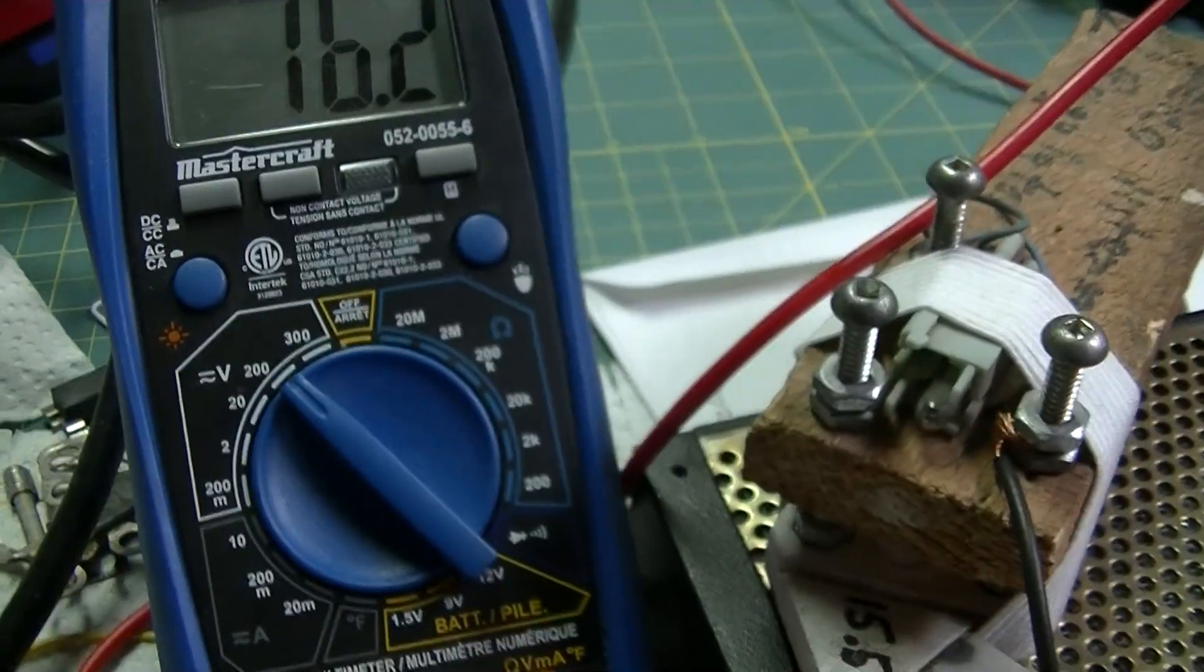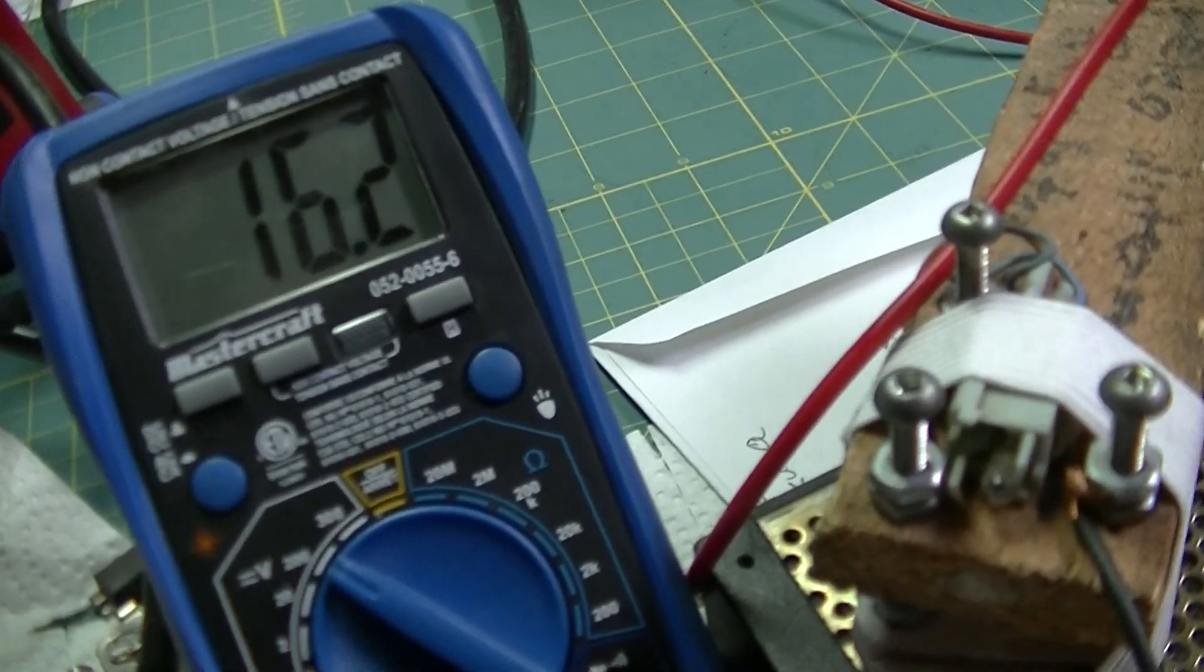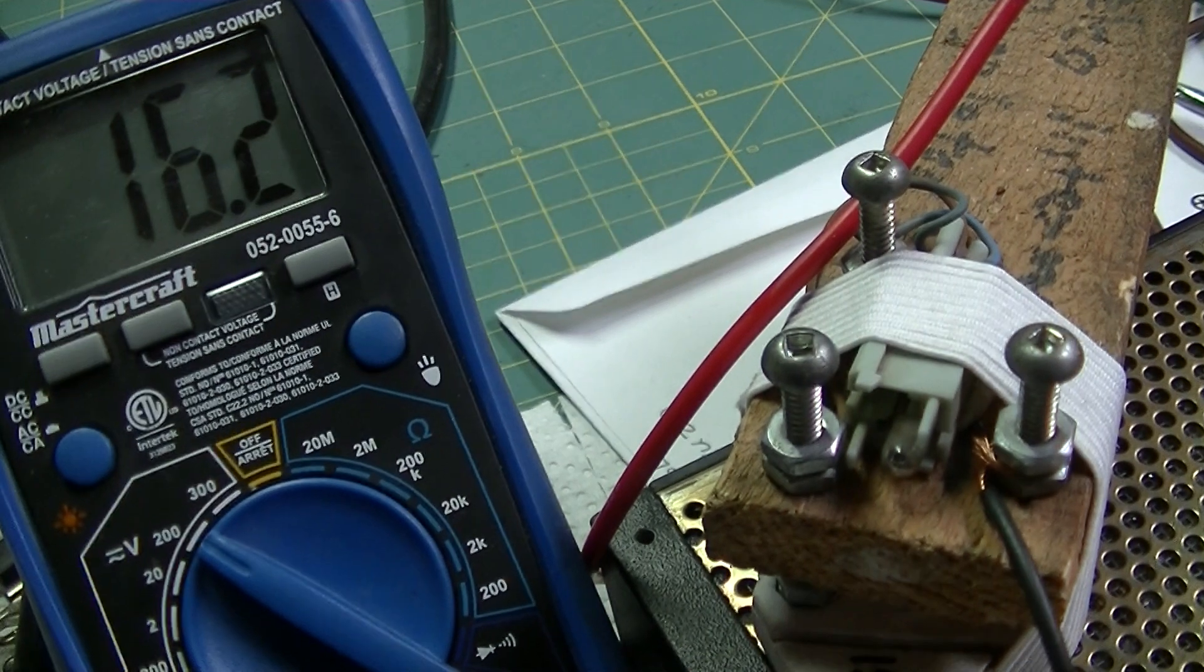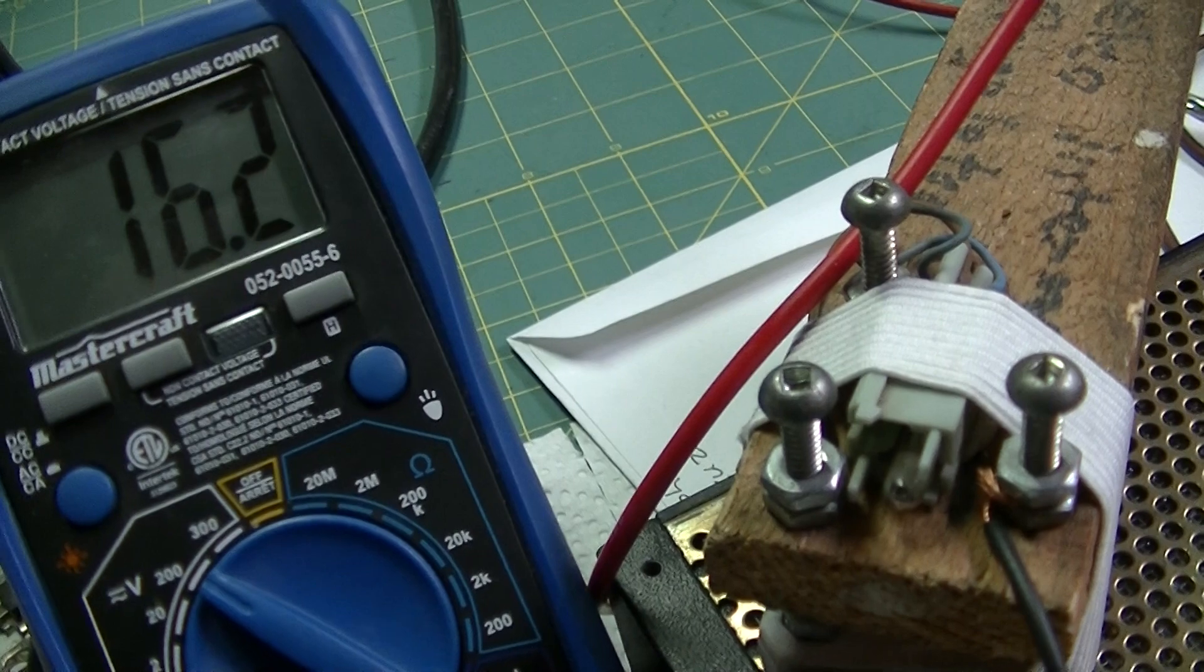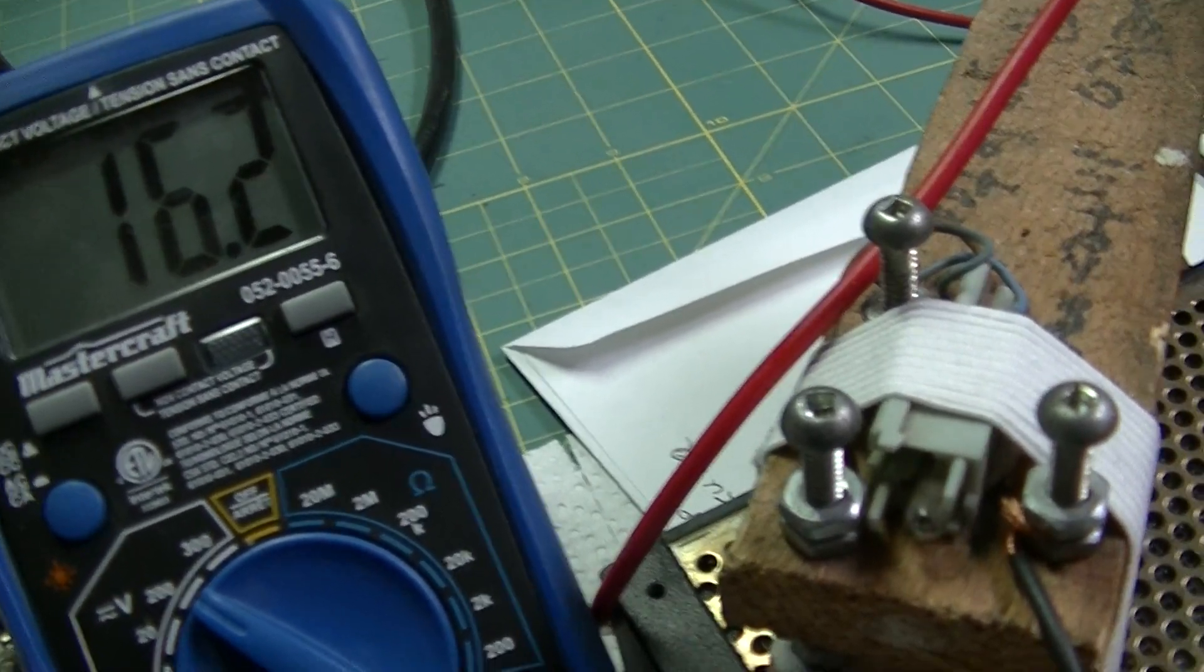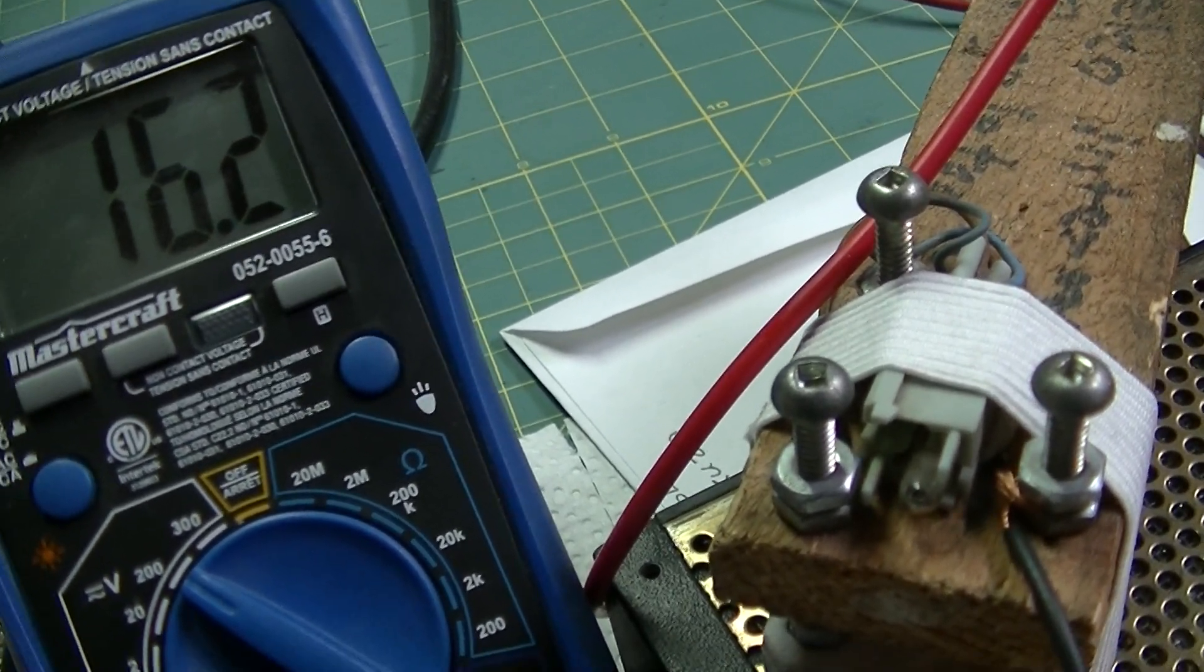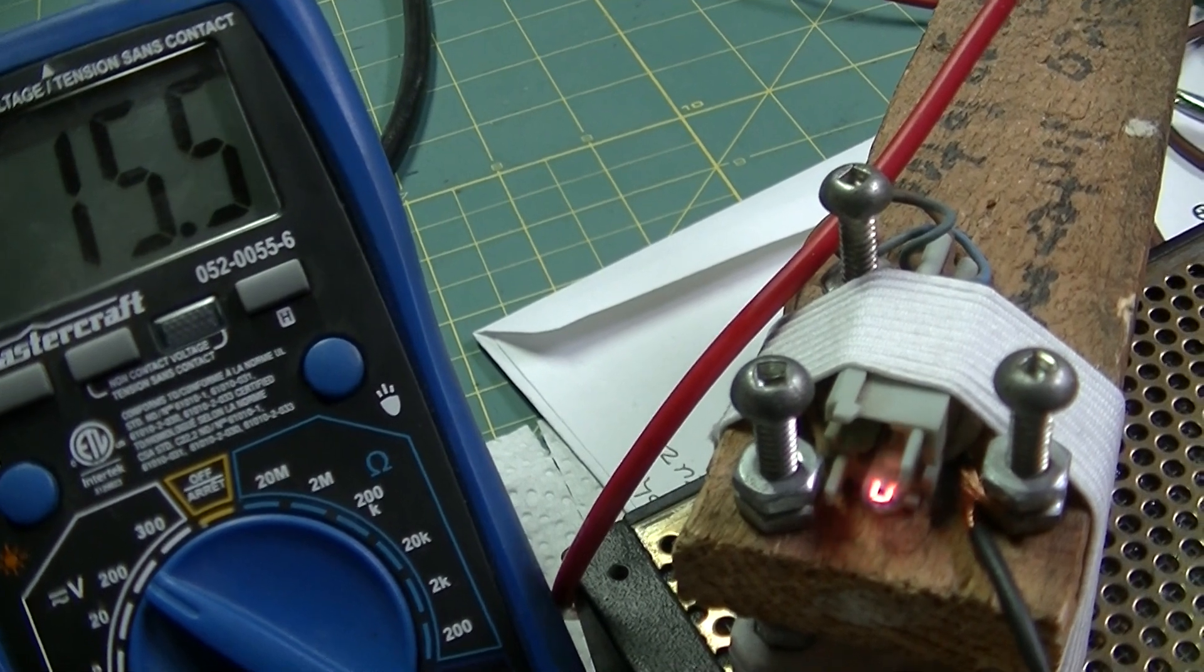As you can see on the meter, right now it's 16.2 volts. So the voltage is high. The regulator is not sending anything to the field. I'm going to reduce that voltage and you'll see the light come on.